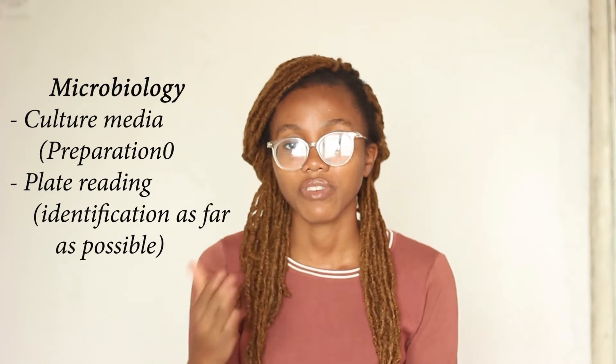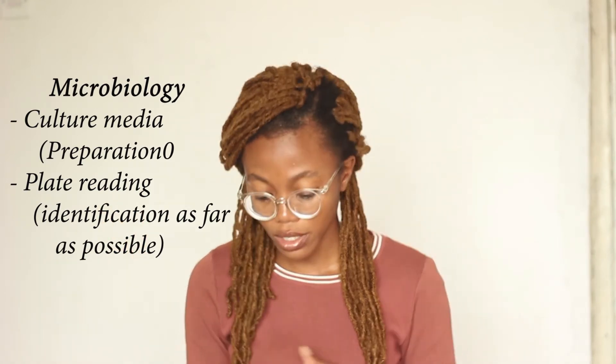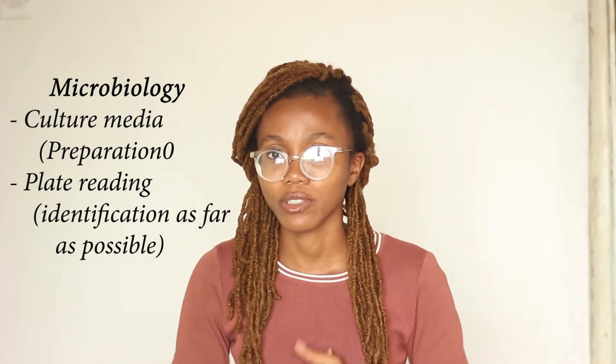Coming to chemical pathology — one key topic for us was urine analysis. For the first professional exam, the normal qualitative analysis of urine is what you'll most likely see. You have to use Benedict's solution to identify glucose presence, for example. It's like a table — you test for carbohydrates, add two drops of Benedict's solution, and if the solution turns from blue to yellow it means carbohydrates are present. So qualitative analysis of urine is one thing you'll most likely see in chemical pathology.